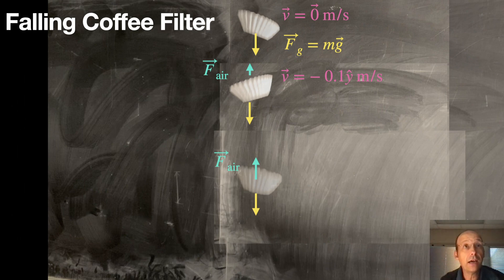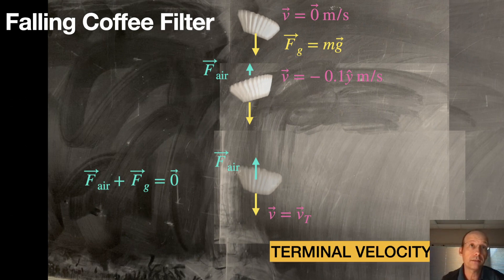And eventually, it'll get down to some point right here where the air resistance force is equal to the gravitational force. And we add those two things together. And we call this terminal velocity. I even put that right there in big yellow and black letters. Terminal velocity. So when that coffee filter falls, it reaches the point where the air resistance force and the weight are the same. And then the net force is zero and no longer accelerates anymore.